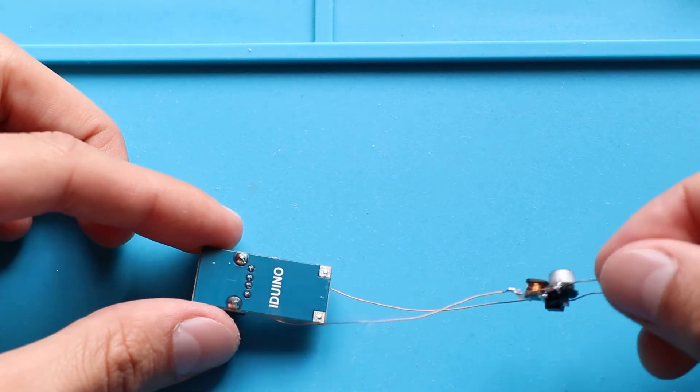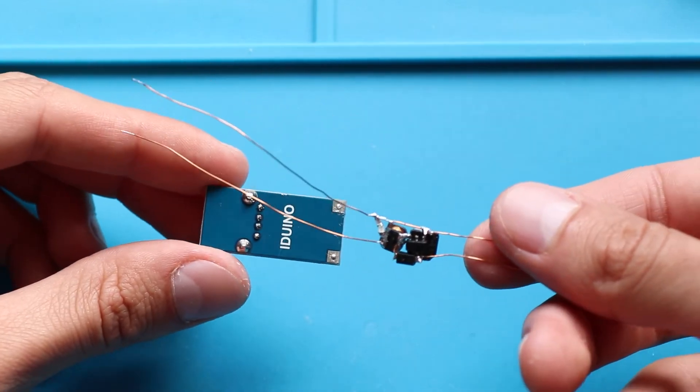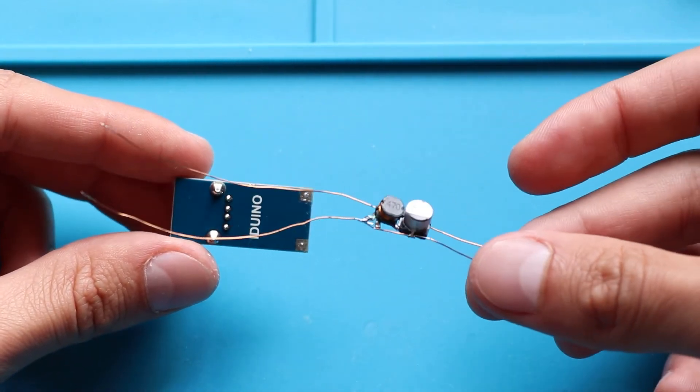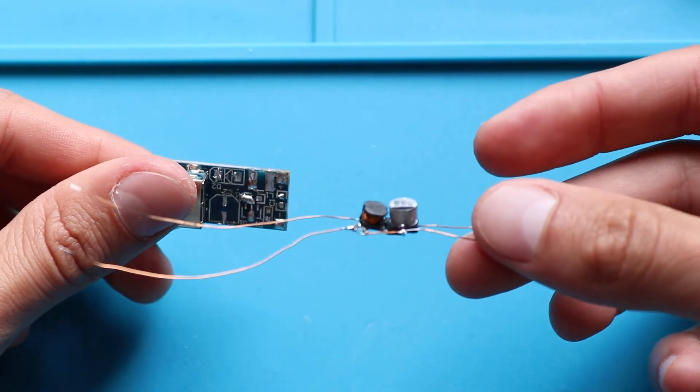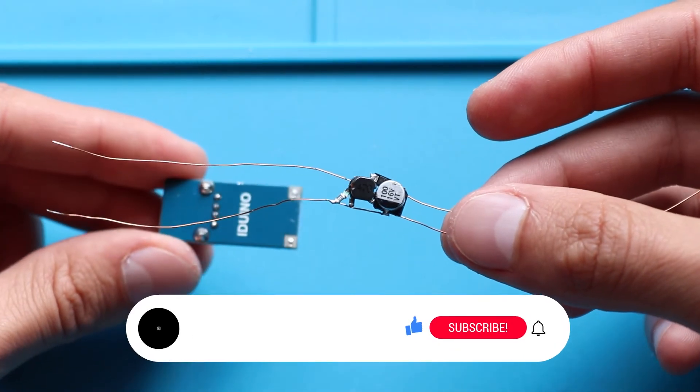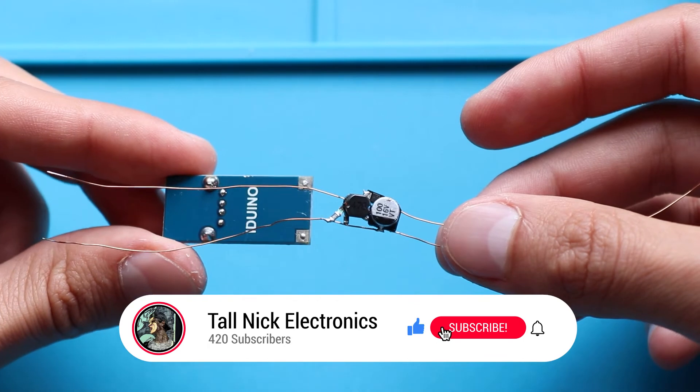So as you can see, in this case, point-to-point method results in a much smaller device. And if you make a prototype or just a model for yourself and want to have it as small as it possibly can be, use this method. You will not regret it. And save some time and money.